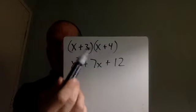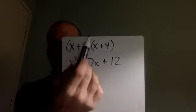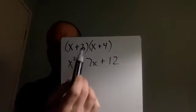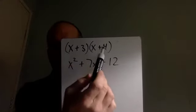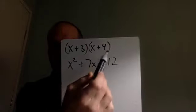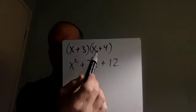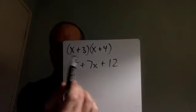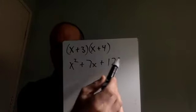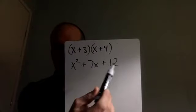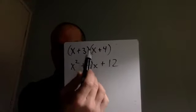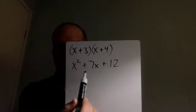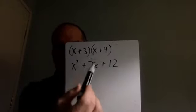These two parentheses got multiplied together. X got distributed through — multiplied by the X to give X squared, multiplied by the 4 to give 4X. The 3 gets distributed through: 3 times X is 3X, and 3 times 4 is 12. You would have a 3X and a 4X, which you add together because those are the like terms, and that gives you 7X.